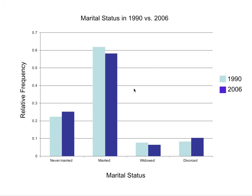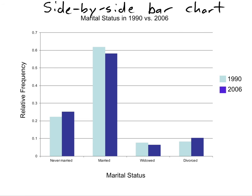Humans are very visual learners, and it's easier for us to understand data when we see it in a visual form. Here's another type of visual representation of some data. The name of this kind of display is a side-by-side bar chart, or we might call it a bar graph — those are the same things. Getting information from a visual display is a skill.